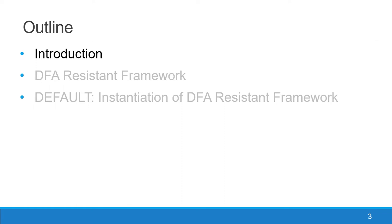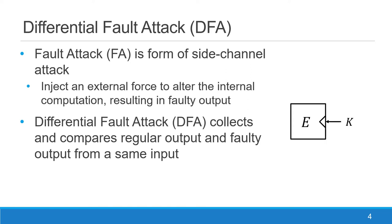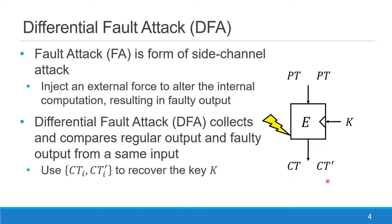A fault attack is a form of side-channel attack where the adversary will inject an external force to alter the internal computation of an algorithm, resulting in faulty output. The differential fault attack is a subclass of fault attack that collects and compares the regular and faulty output from the same input. During the first computation, we have regular encryption from plaintext to ciphertext. During the second computation for the same plaintext, the attacker injects a fault to produce a different faulty ciphertext. From this pair of ciphertexts, they try to recover the secret key.